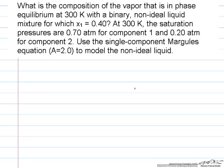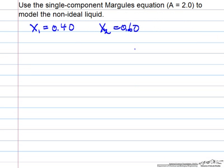This problem asks for the composition of vapor that's in phase equilibrium with a non-ideal liquid. We're given that the mole fraction of one component in the binary liquid, so x1 is 0.4 and x2 is 0.6.